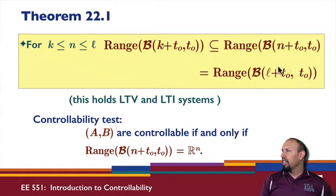So, n steps ahead of t0. This is l steps ahead of t0. So, again, l is greater than or equal to n. So, notice here I get containment here, but here I get equality between these two sets. So, that's what this theorem says. And this holds both for linear time varying and linear time invariant systems.